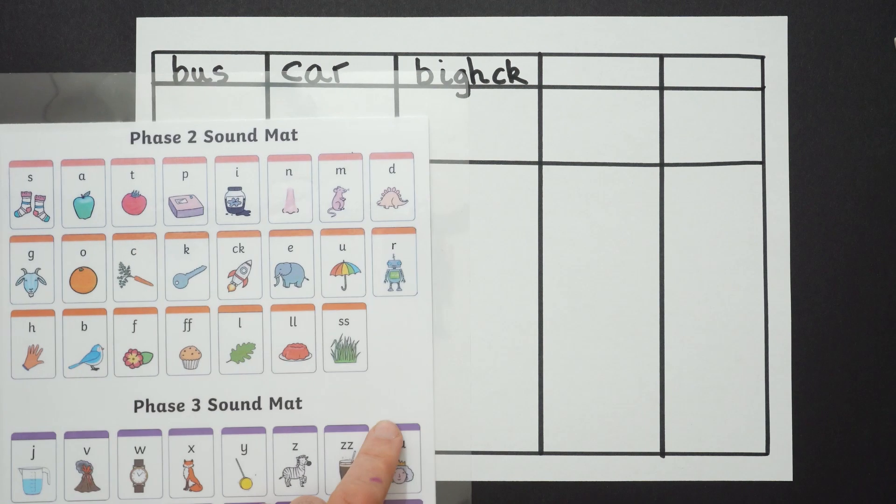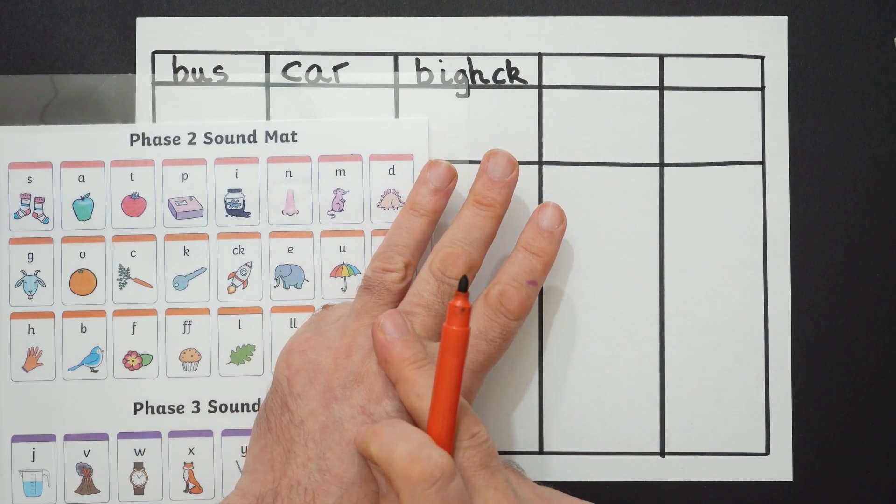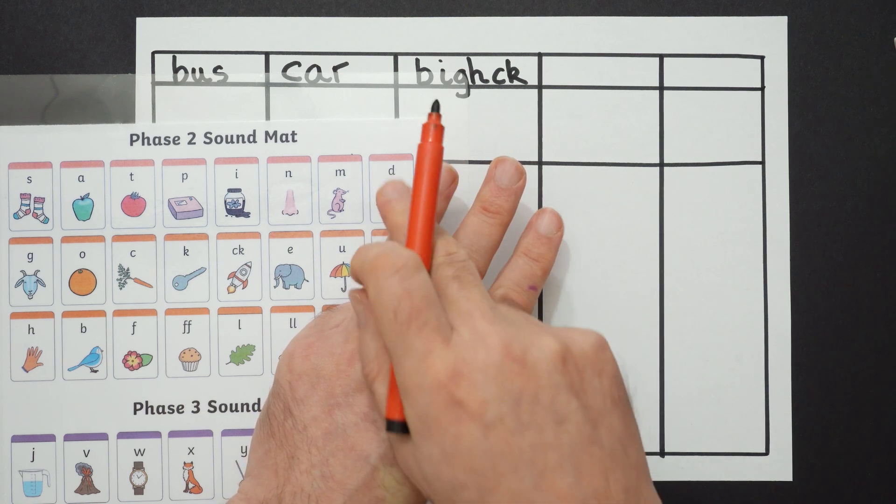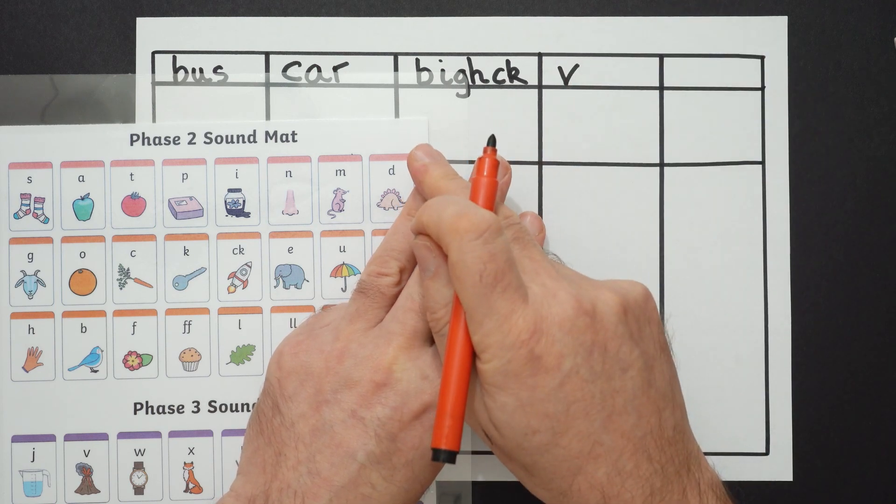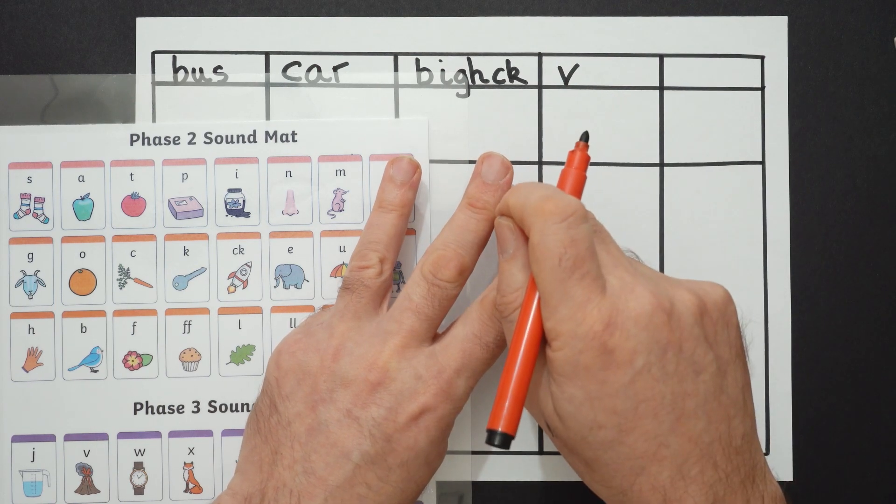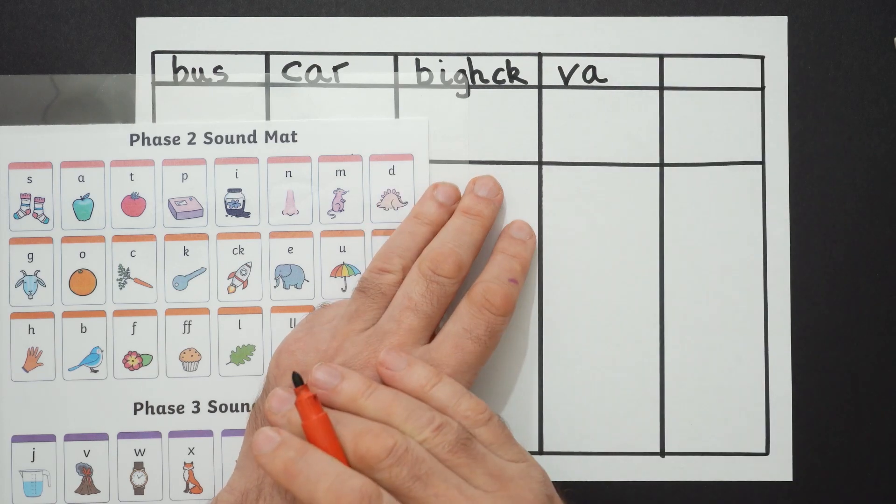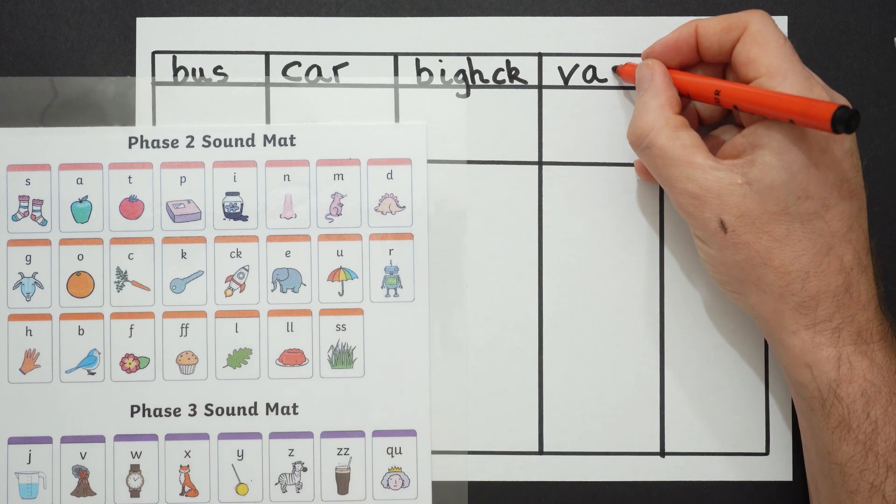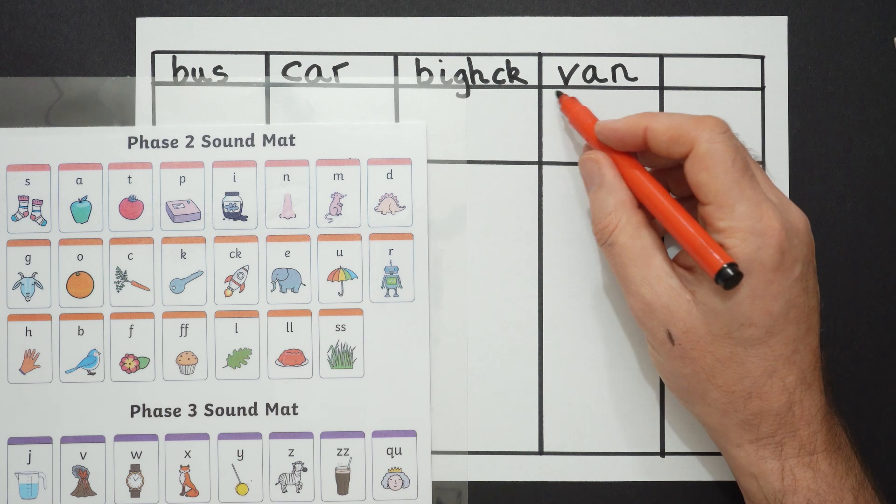I'm going to have a van. Okay, sound out van for me. What's the first sound in van? Volcano, vat. What's next sound? Van, vat, vat, A. And what's the last sound in van? Write that down. Now I'm going to check it. V, A, N, van.